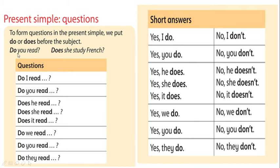For a yes/no question: if the answer is yes, you say 'Yes, I do.' If no, you say 'No, I don't.' Remember: he, she, it go together with 'does' or 'doesn't'. Follow the short form in order to answer correctly.